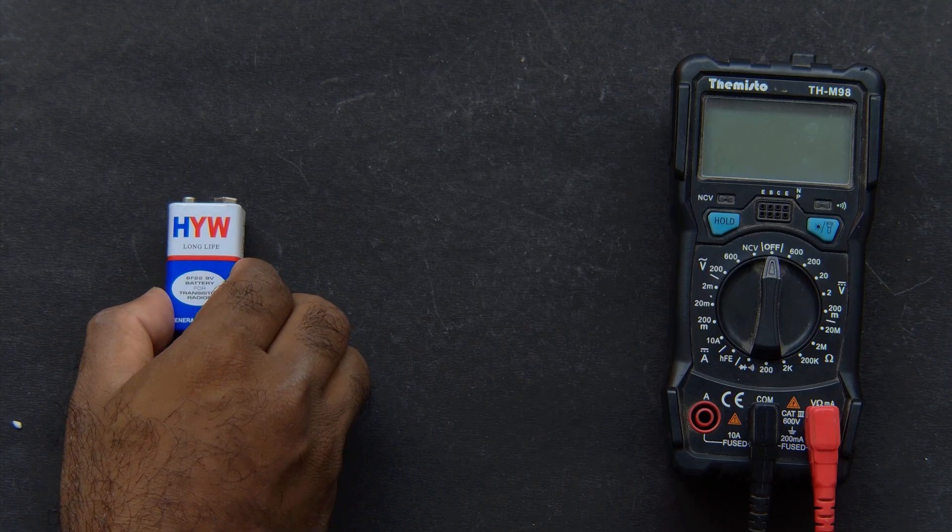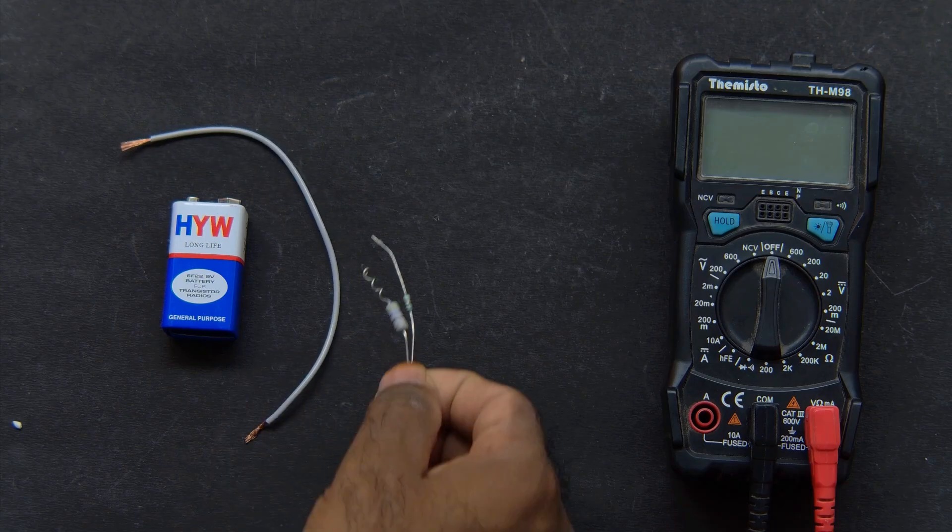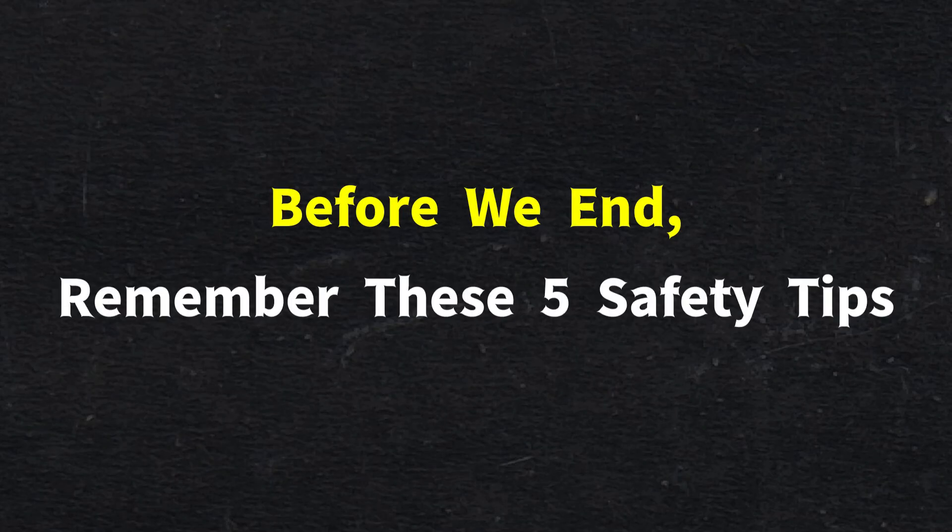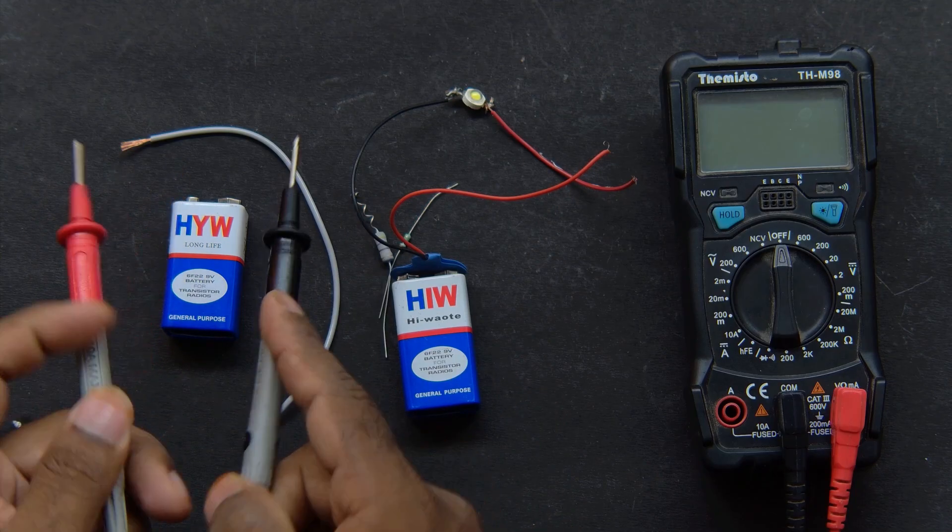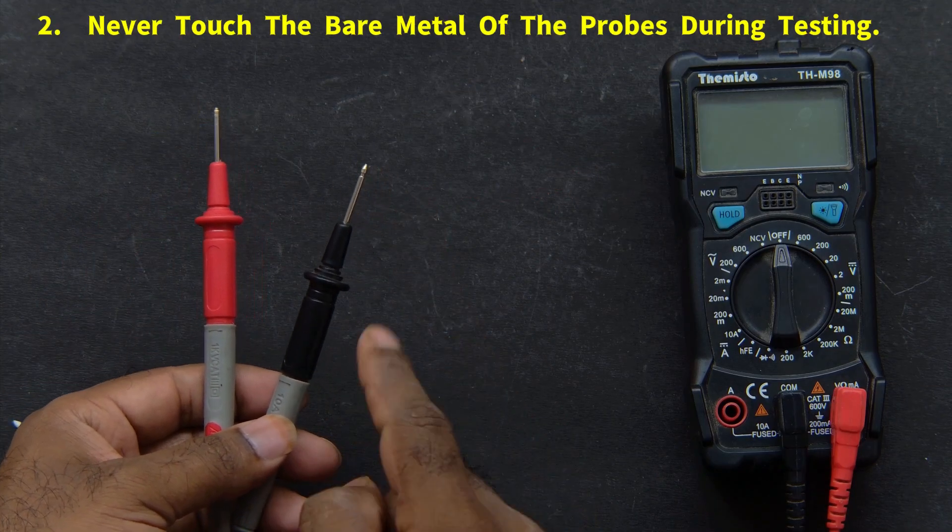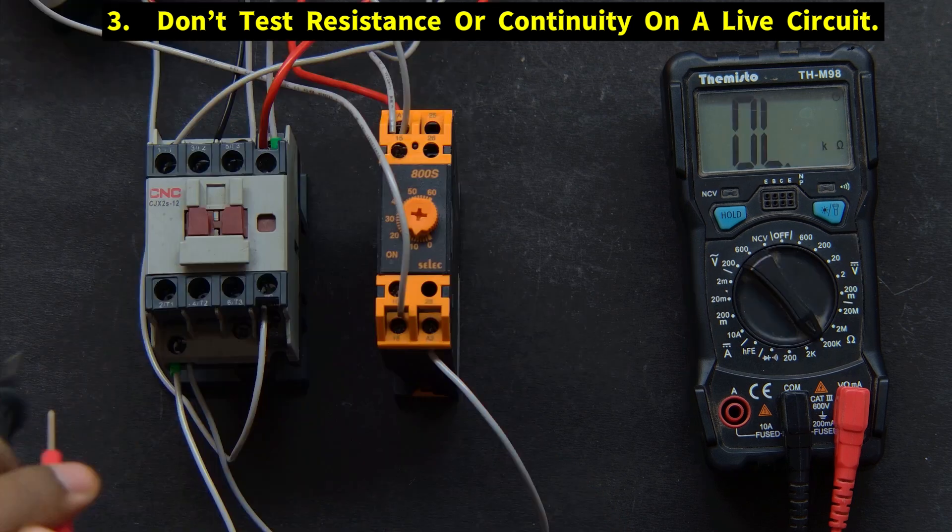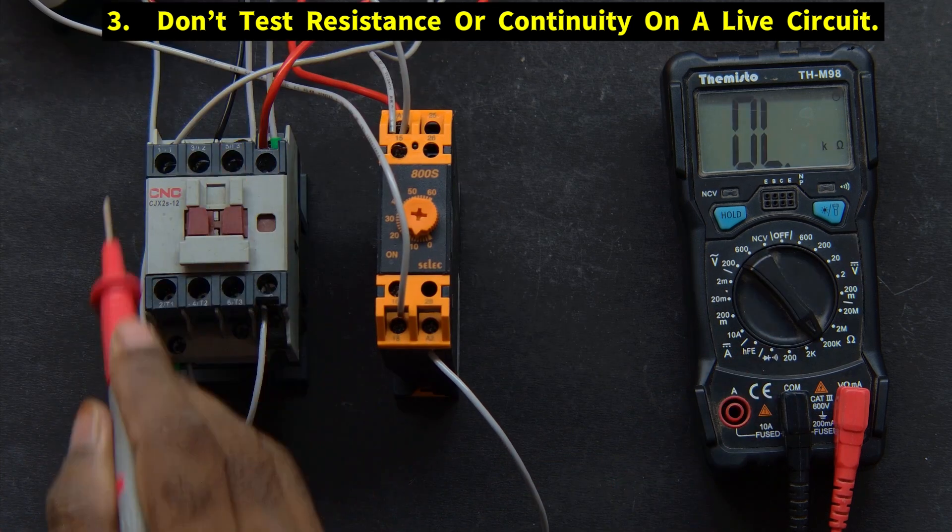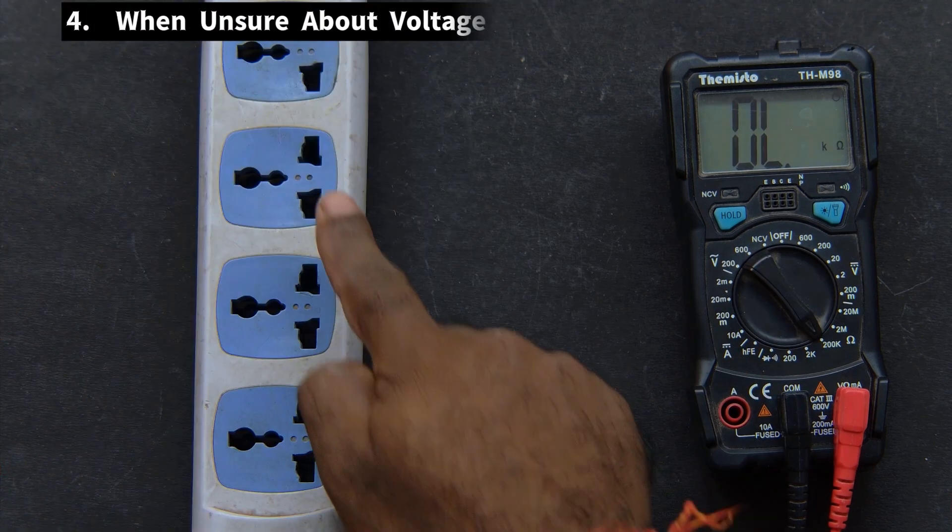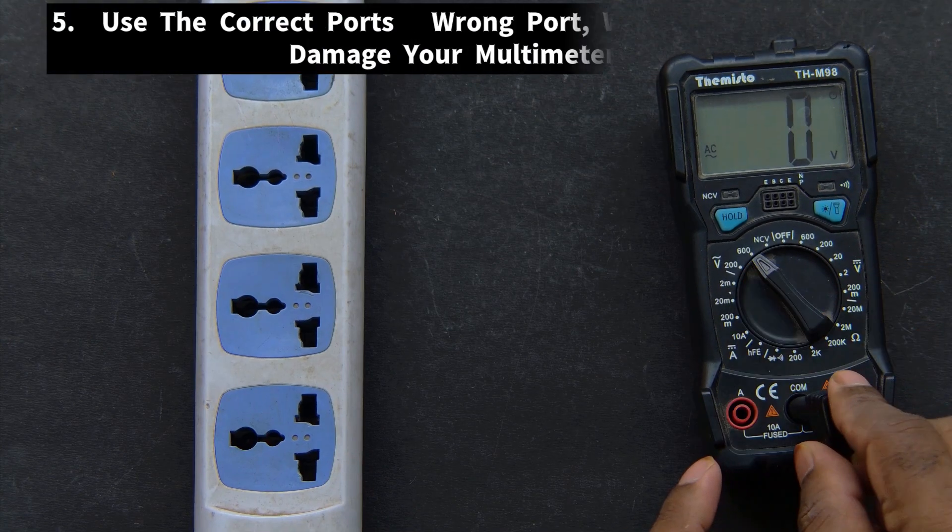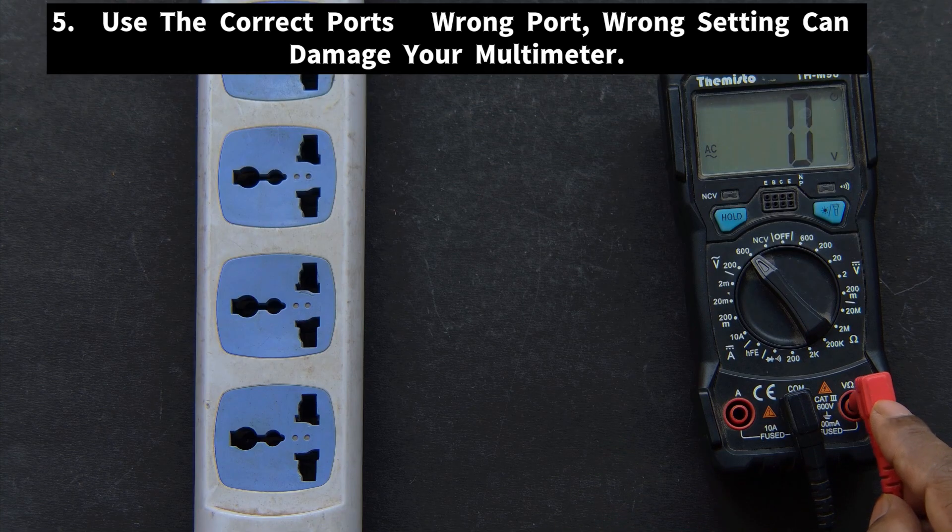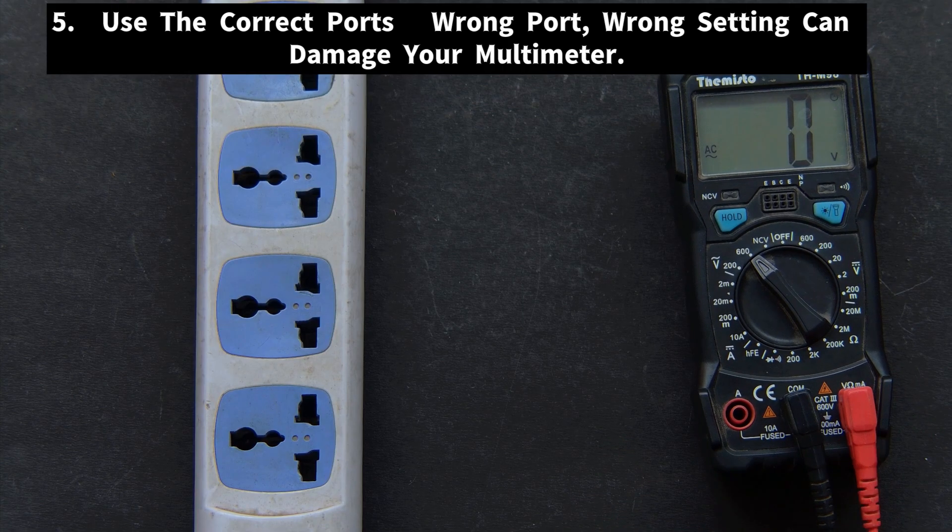So now you have seen how to measure voltage, test wires, check resistance, and even measure current. But before we end, remember these five safety tips. First, always check and set the dial before connecting the probes. Number two, never touch the bare metal of the probes during testing. Third, don't test resistance or continuity on a live circuit. Number four, when unsure about voltage range, start from the highest. And the last one is use the correct ports. Wrong port, wrong setting can damage your multimeter.